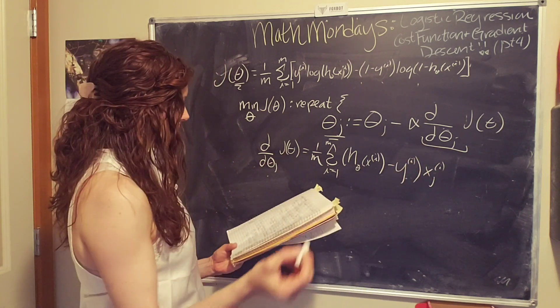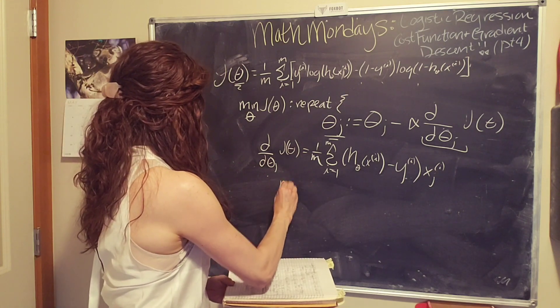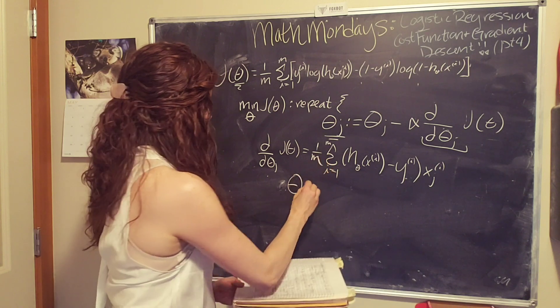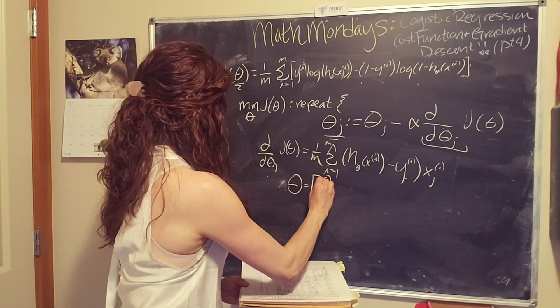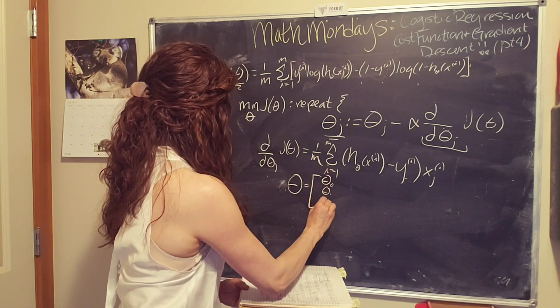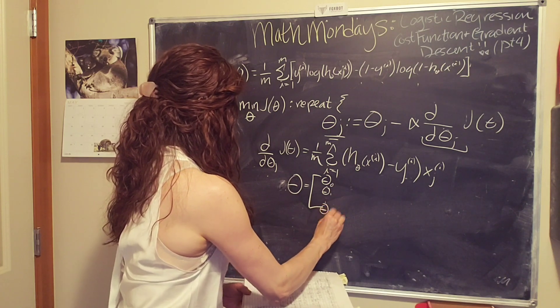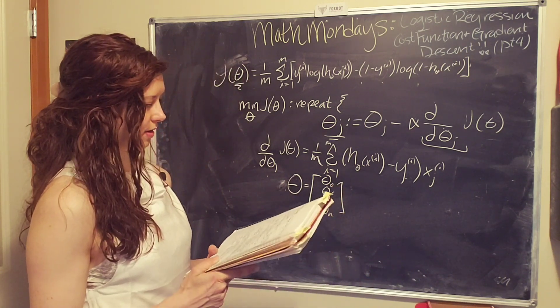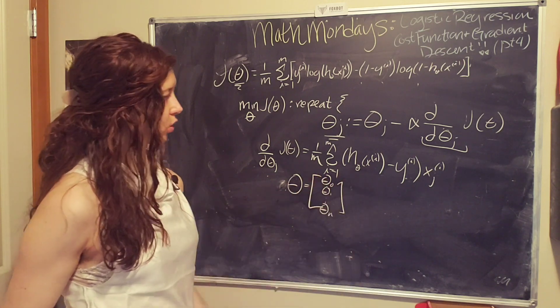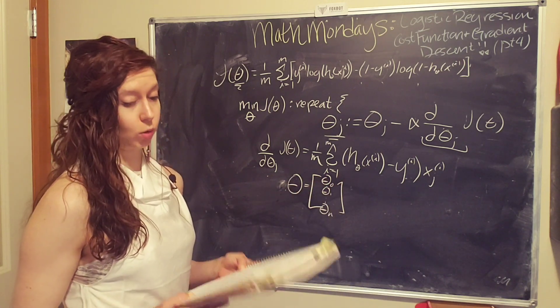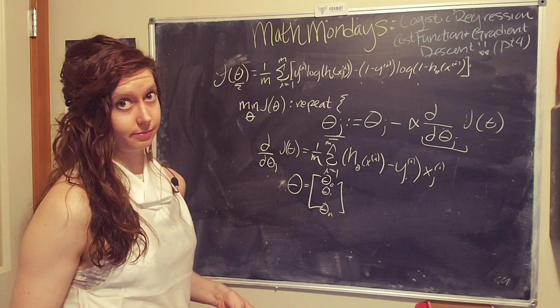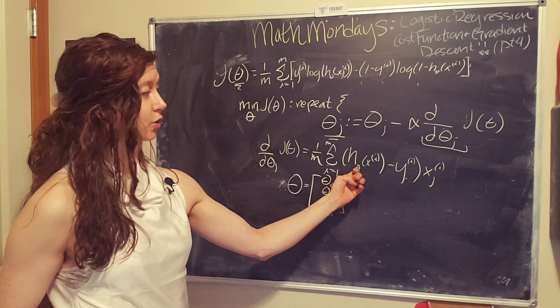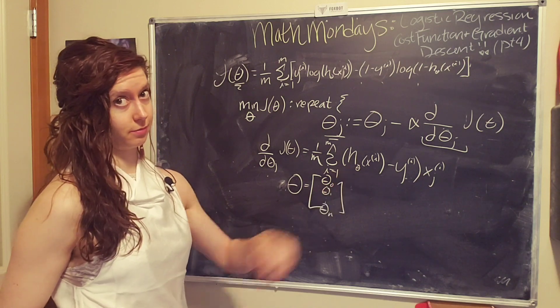So let's say we have n features, then our theta matrix is going to look like theta 0, theta 1, and theta n. So, this actually looks a lot like our linear regression, but it's not because our hypothesis function is a sigmoid function.